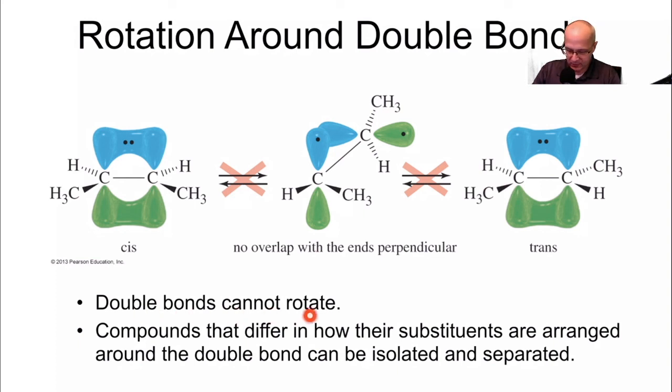Double bonds cannot rotate. Compounds that differ in how the substituents are arranged around the double bond can be isolated and separated because they're different. Keep that in mind.